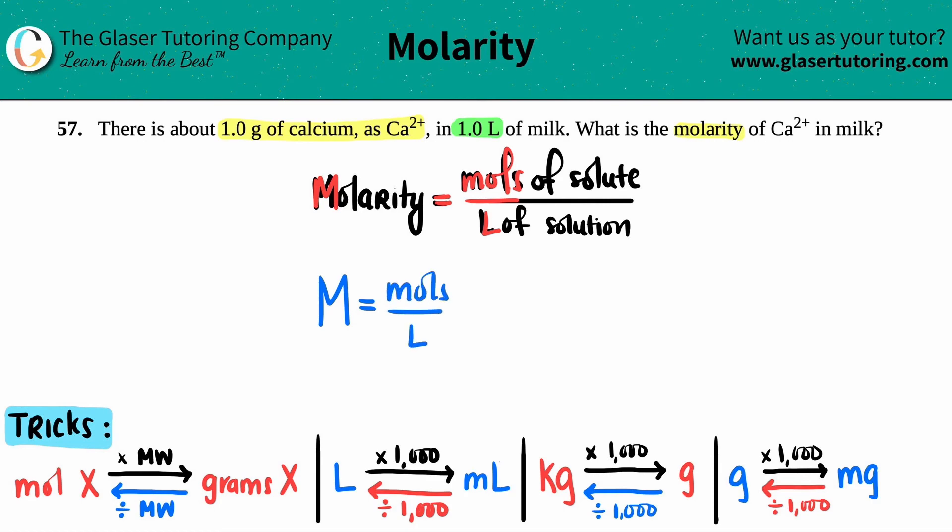If we're solving for molarity, we gotta know the moles and the liters. Did they tell us any? Well, they didn't tell me a mole value. They told me I had 1.0 grams, but they did tell me it was in one liter. So the bottom number is 1.0 liters.